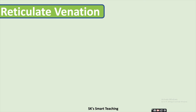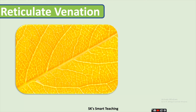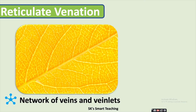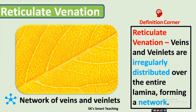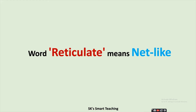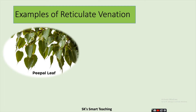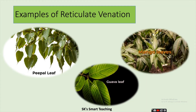In reticulate venation, the veins and veinlets are irregularly distributed over the entire lamina, forming a network. Such leaves are said to have reticulate venation. The word reticulate means net-like. The leaves of plants such as peepal, guava, and mango have reticulate venation.